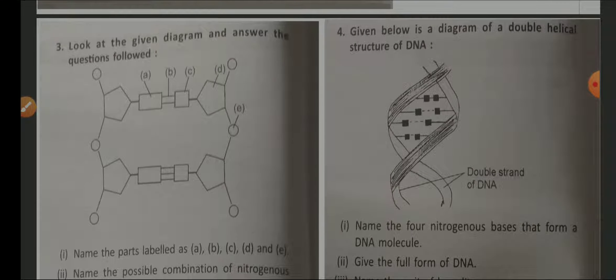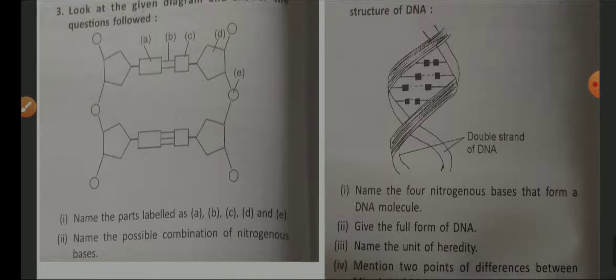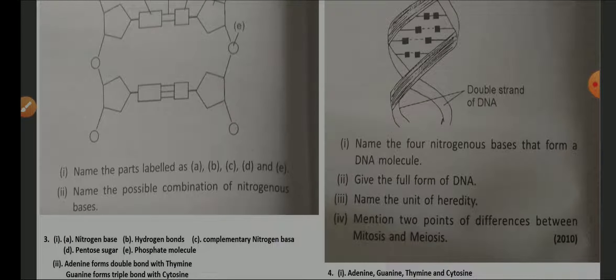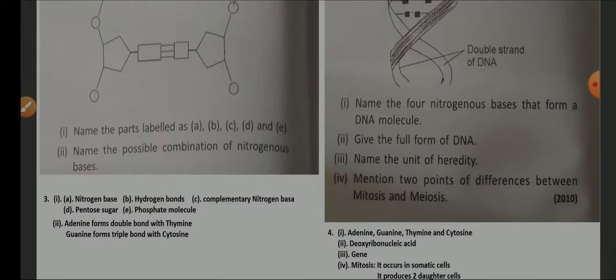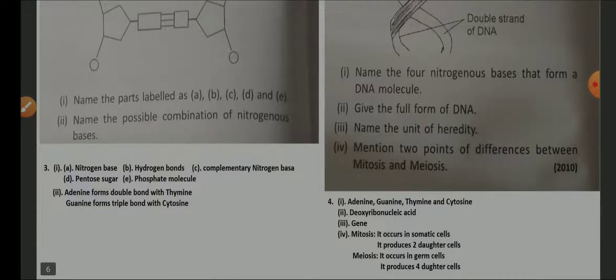Question four: name the four nitrogen bases of DNA — adenine, guanine, thymine, and cytosine. The full form is deoxyribonucleic acid. The unit of heredity is the gene. Two differences between mitosis and meiosis: mitosis occurs in somatic cells while meiosis occurs in germ cells; mitosis produces two daughter cells while meiosis produces four daughter cells.